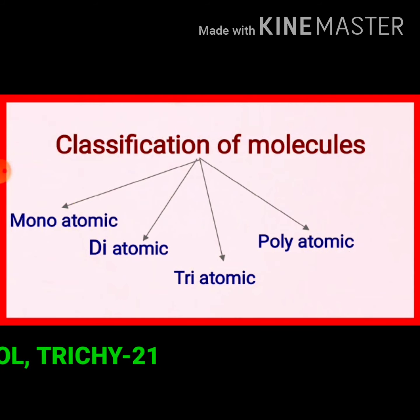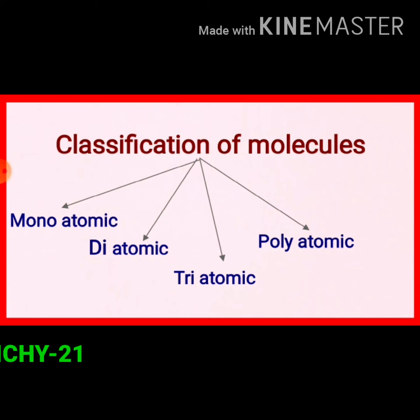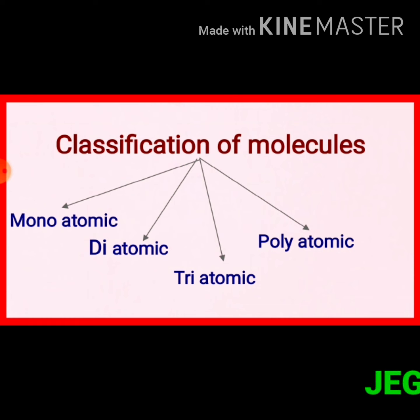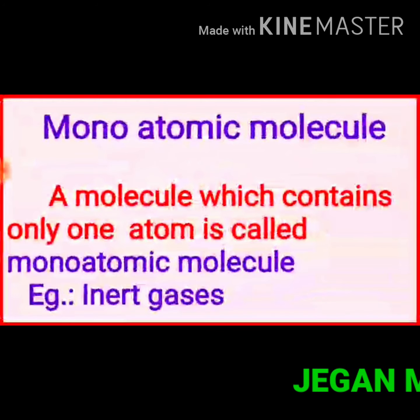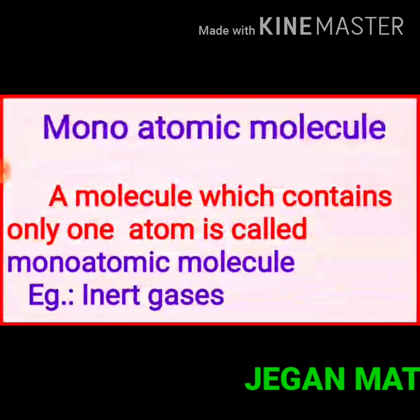This is the flow chart of classification of molecules. Molecules are classified depending on the number of atoms present in them. Molecules are classified as monoatomic molecule, diatomic molecule, triatomic molecule and polyatomic molecule. Here, mono means one, so monoatomic molecule means a molecule which contains only one atom.